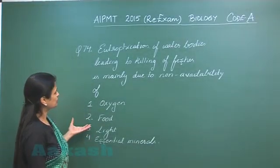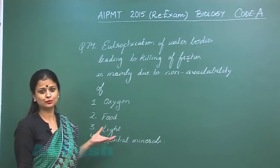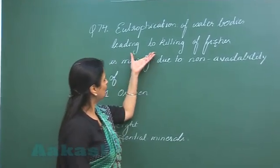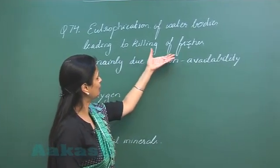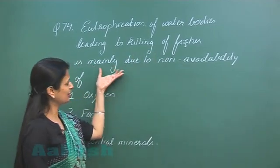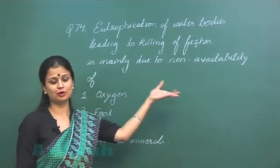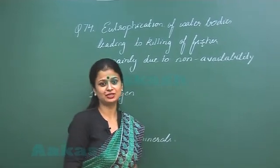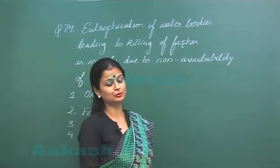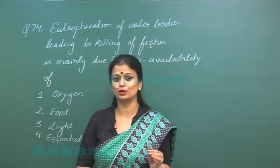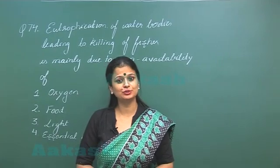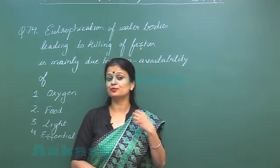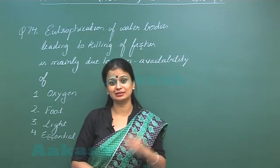Let's discuss question number 74. Eutrophication of water bodies leading to killing of fishes is mainly due to non-availability of what? Eutrophication is the nutrient enrichment of a water body. Due to this nutrient enrichment, there is profuse growth of algae.